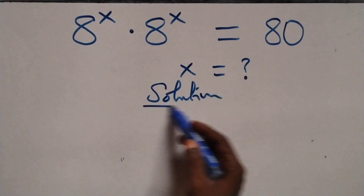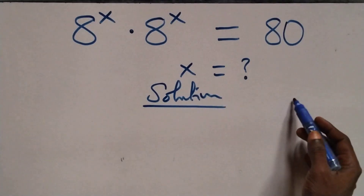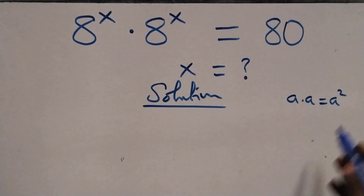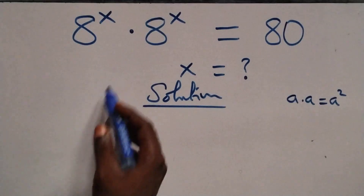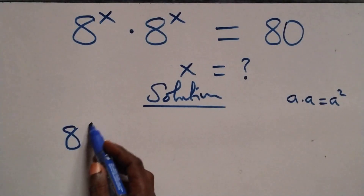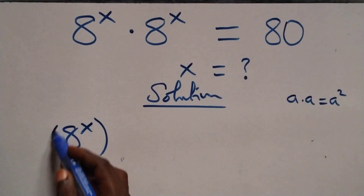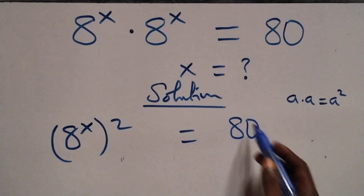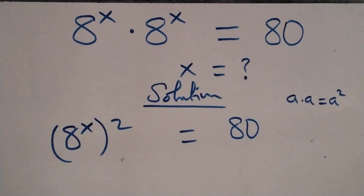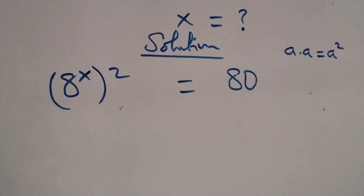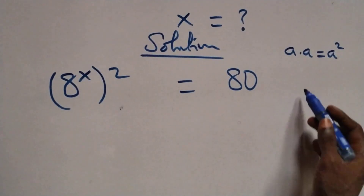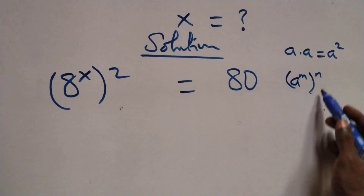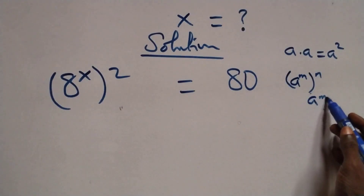From what we have here, this follows when we have a times a — the same thing as a squared. Multiplying, we write it as a raised to power x squared. Then from here it follows that when we have a raised to power m times a raised to power n, this is the same thing as a raised to power m·n.